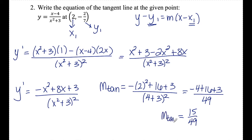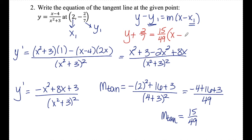So now I have m tan, I have x1, I have y1. I just need to plug those values into the equation of my line. My answer here will be y minus negative 2 over 7, so that becomes y plus 2 over 7 equals 15 over 49 times x minus 2. There is the equation of my tangent line.